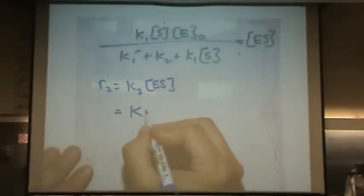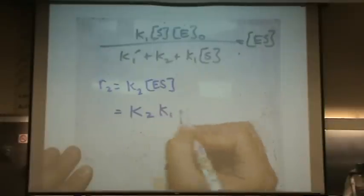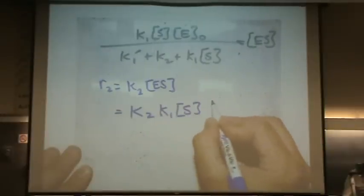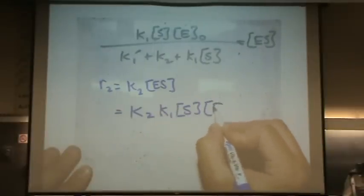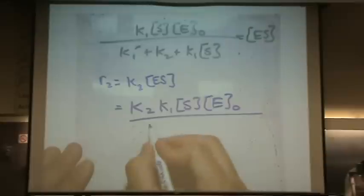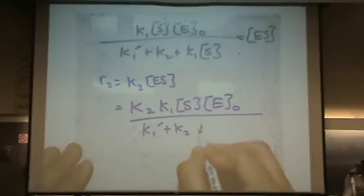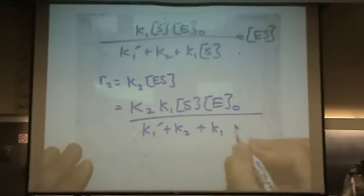Let's plug in. K2 times ES — so K2 times all this mess — K1 times S times E₀. That's all the numerator. Denominators are still the same: K1 prime plus K2 plus K1·S.